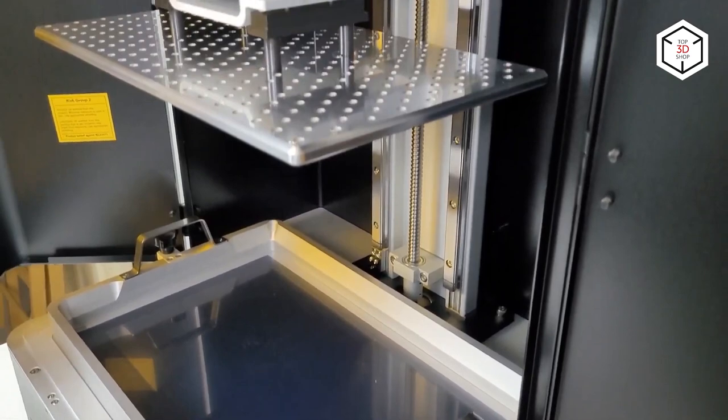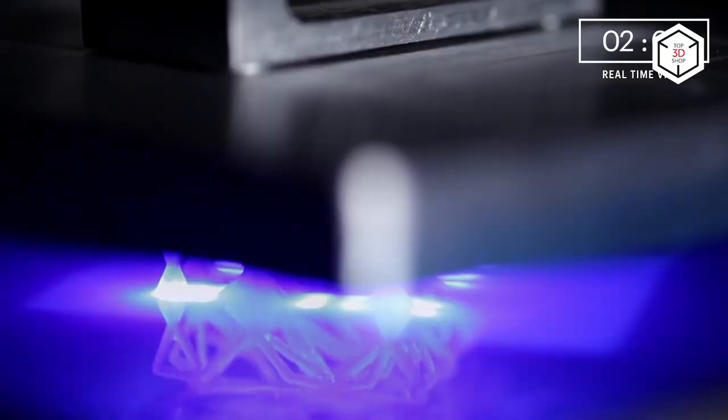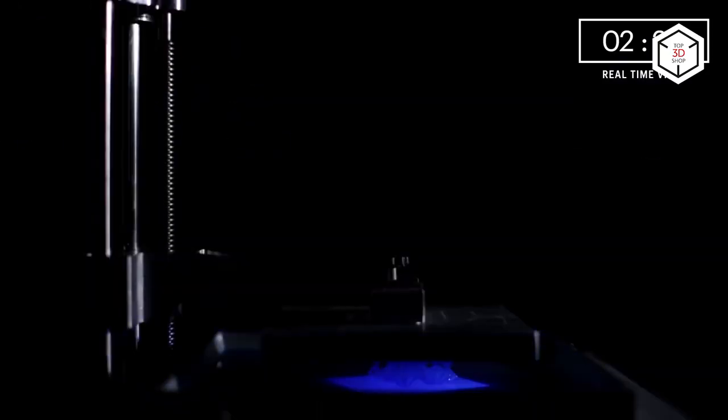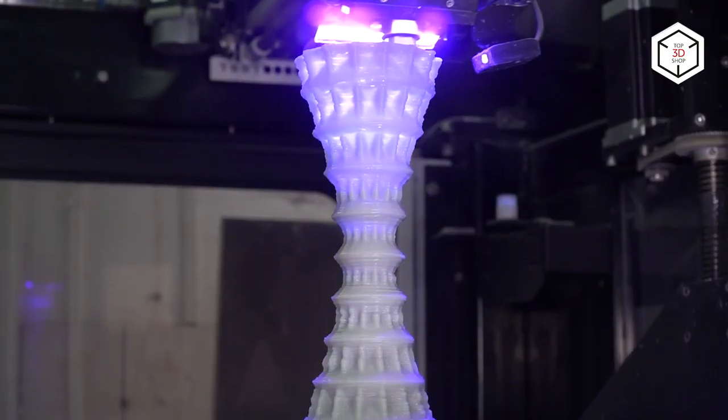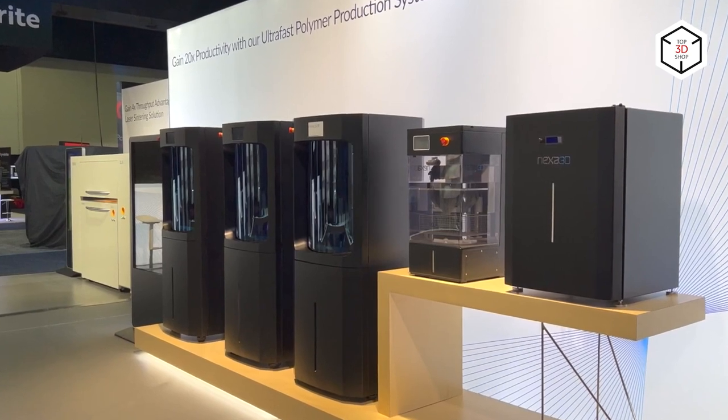Although for the longest time most resin 3D printers used to be small in size, limiting their application to only miniatures and dental models, today we'll show you that such machines can print scale models as large as 145 by 111 by 180 centimeters in one go.